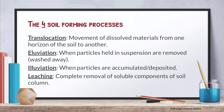The four main soil forming processes are: one, translocation; two, eluviation; three, illuviation; and four, leaching. Translocation is basically the movement of dissolved minerals and dissolved materials from one horizon to another. Eluviation is when particles held in suspension are being washed away. Illuviation — with an 'I' — is when particles are actually deposited and accumulated. Leaching is basically the complete removal of soluble components from your soil column, so minerals are leached away.